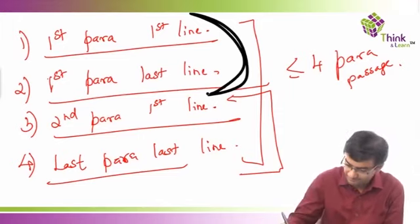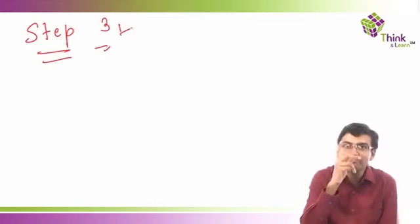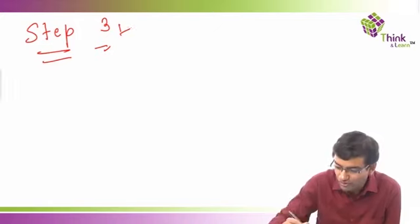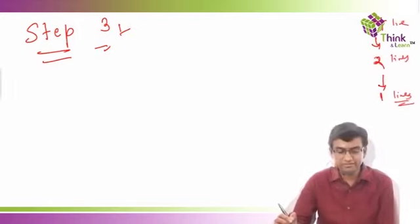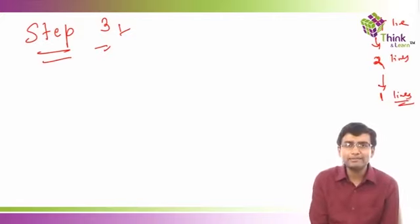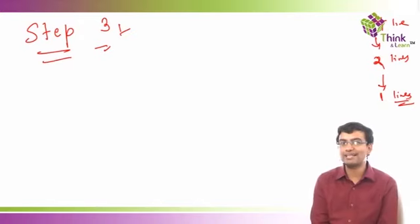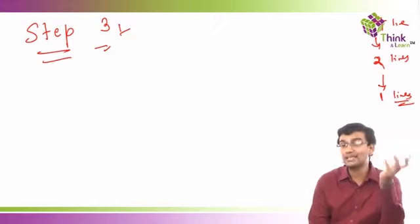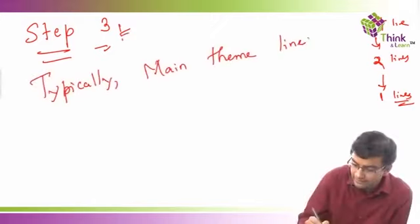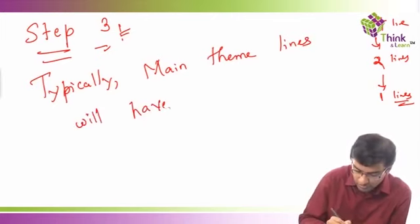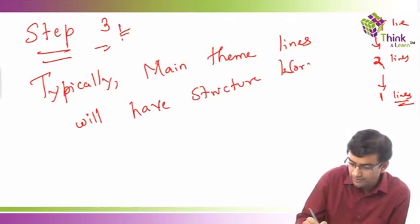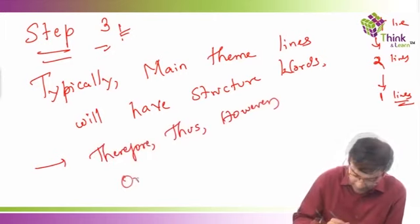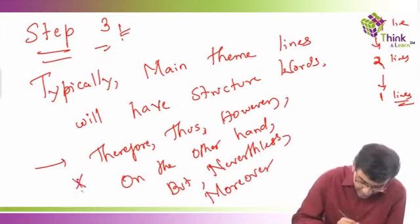From four lines we went to two lines, and now from two lines we go to one — the single most important line. Typically main theme lines will have structure words. If you are stuck between two lines, find which line has a structure word and that will be the most important line. Structure words are things like: therefore, thus, however, on the other hand, but, nevertheless, moreover — these are very important structure words.